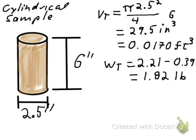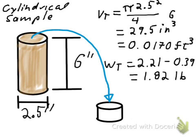Now we know the total volume and the total weight of the sample. We're also going to need to know the water content of the soil in order to calculate the other parameters — the void ratio, the porosity, etc. To determine the water content, we're going to take a separate specimen out of the cylindrical sample. We'll take a small amount of soil from the cylindrical sample, put it in a separate container, and that will be our water content sample.